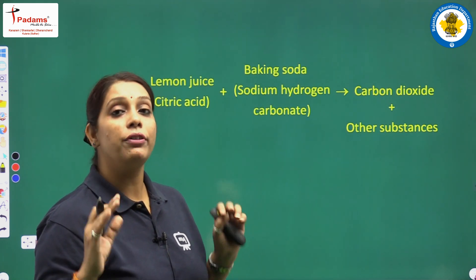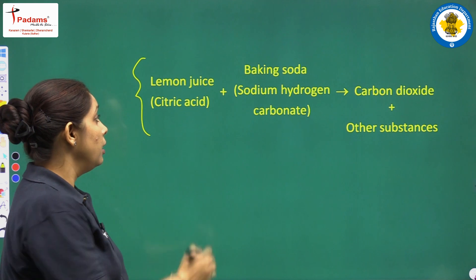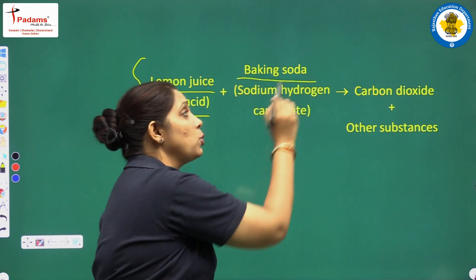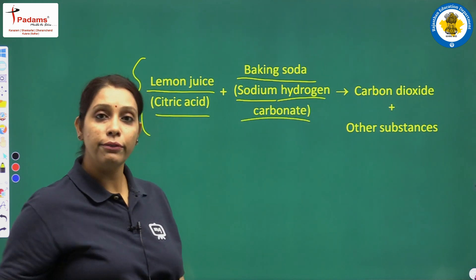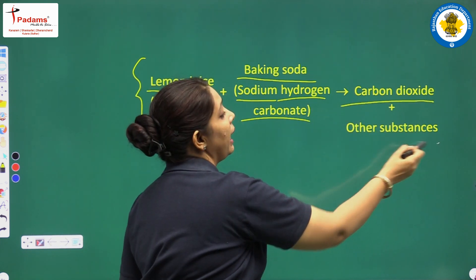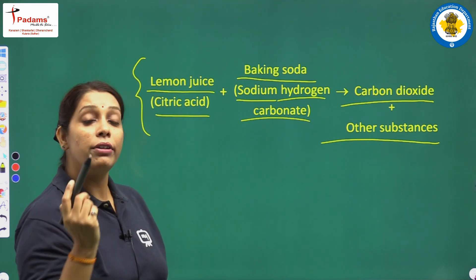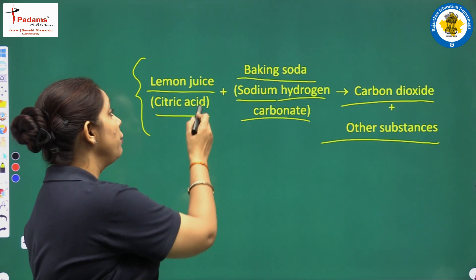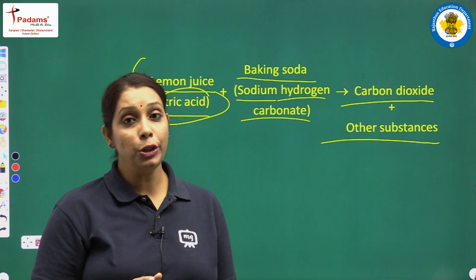We can also write the reaction. Lemon juice contains citric acid; we mix it with baking soda, whose chemical name is sodium hydrogen carbonate. By the reaction of these two, we get carbon dioxide and other substances. This is similar to vinegar plus baking soda — vinegar contains acetic acid, and here we have citric acid. In this way, write this answer in your notebook.